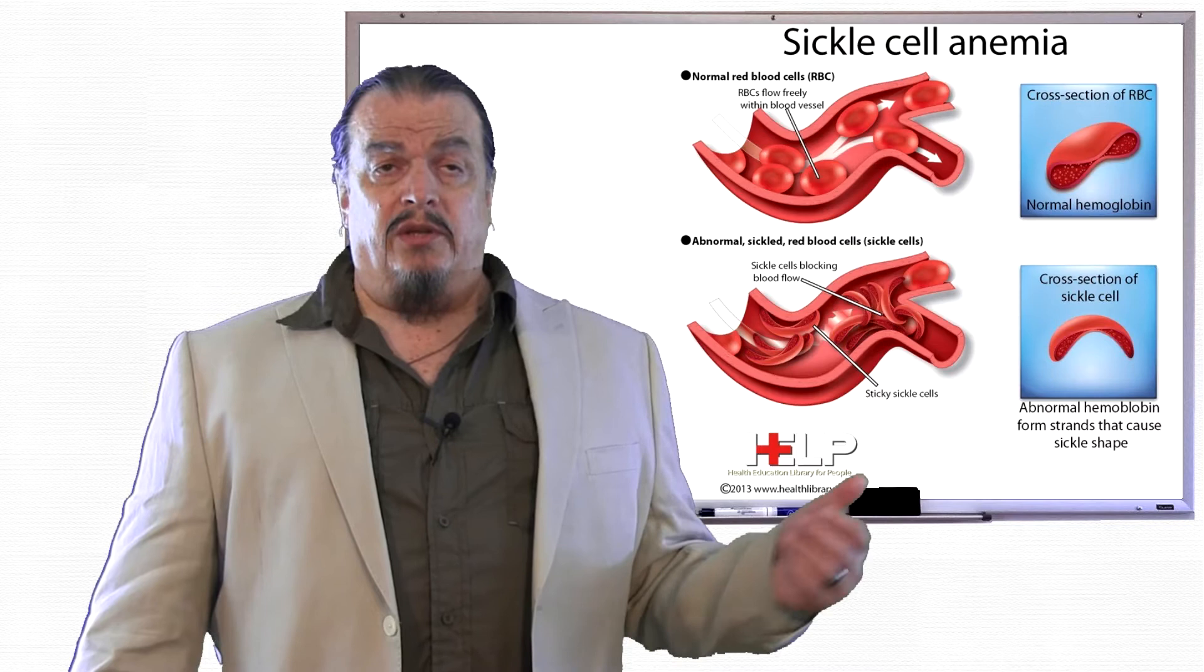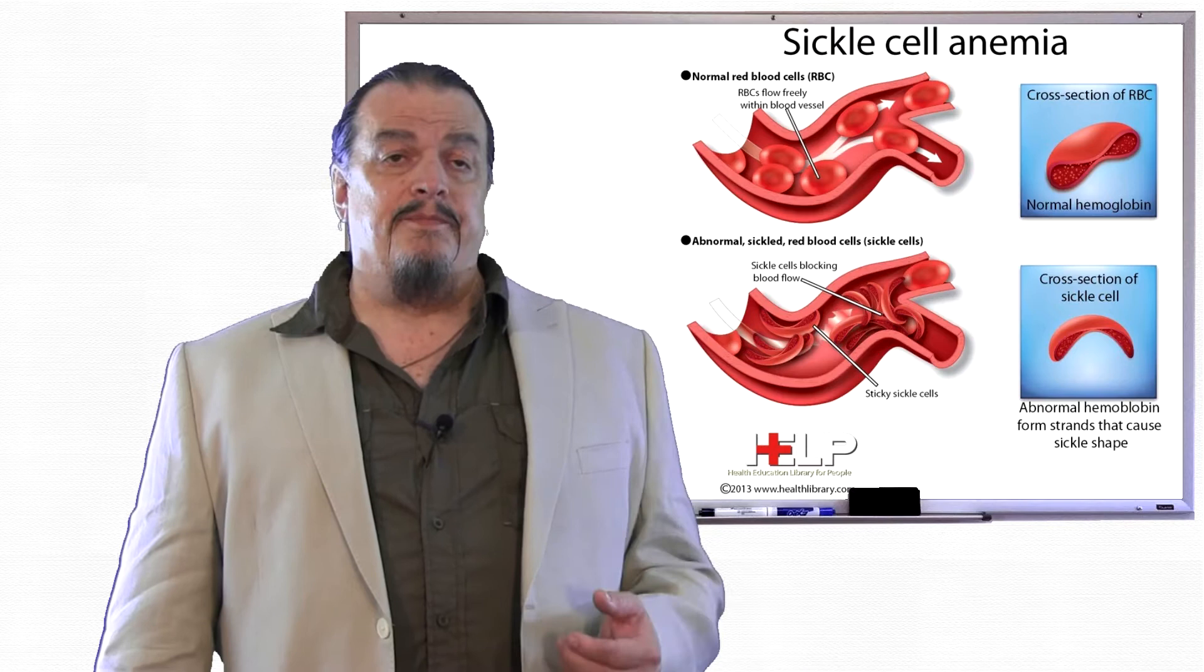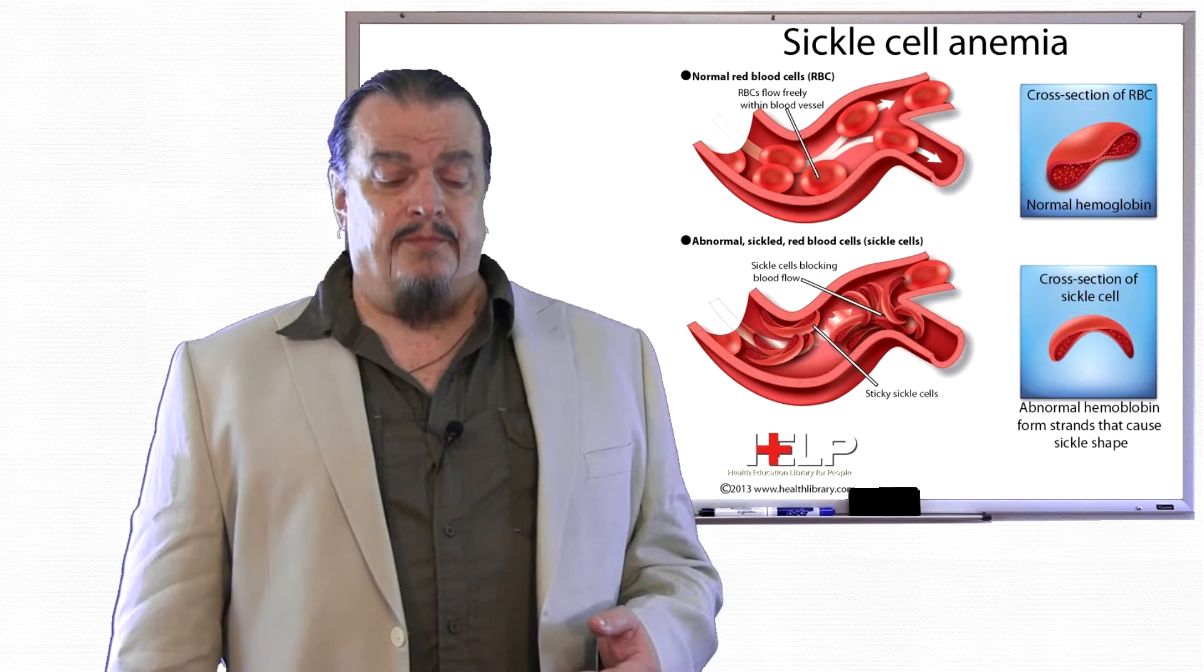As you can see, instead of being round like normal blood cells, the blood cells are sickle-shaped. The shape can cause clogs in arteries. Also, sickle cell blood cells die off early and can leave the patient with less blood, causing anemia. The life expectancy of someone with sickle cell can be 30% shorter than the average lifespan.